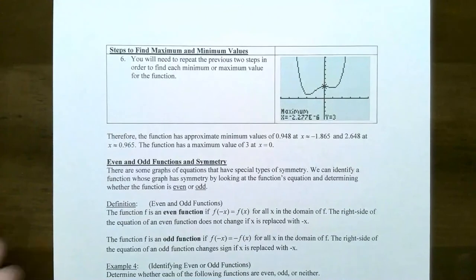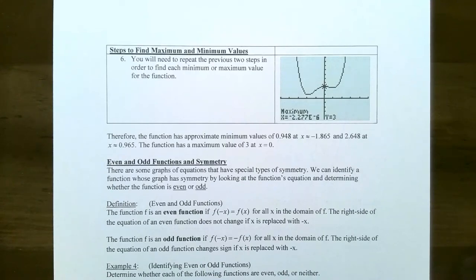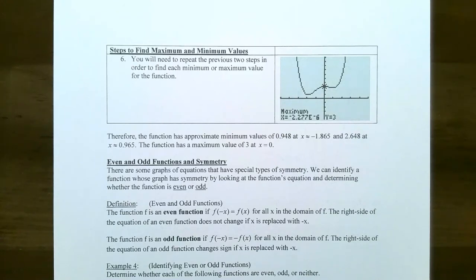This is a good place to stop now that we've talked about increasing, decreasing, and constant intervals, and also relative max and relative min in terms of looking at a graph and using a graphing calculator. If you have any questions about any of the examples in this video or while working on the homework, please let me know. I'll see you at the next video when we talk about symmetry and piecewise functions.